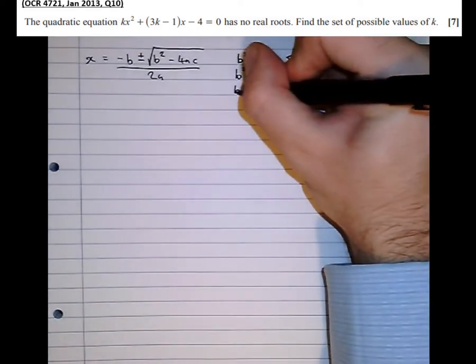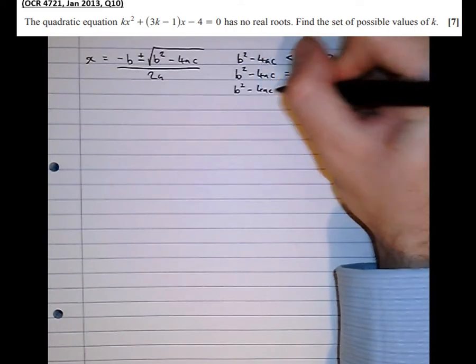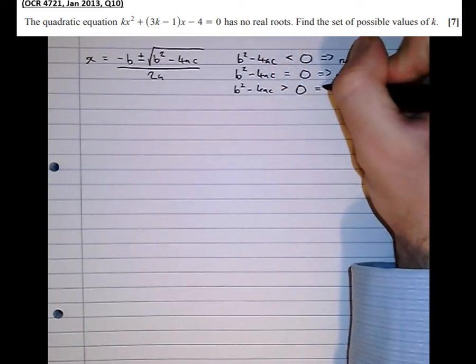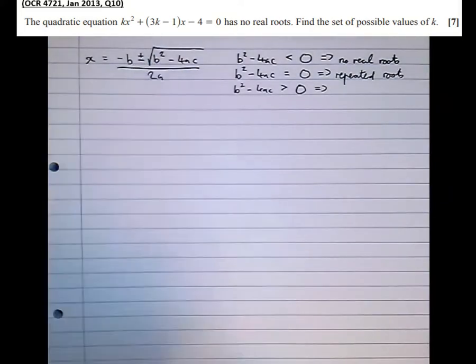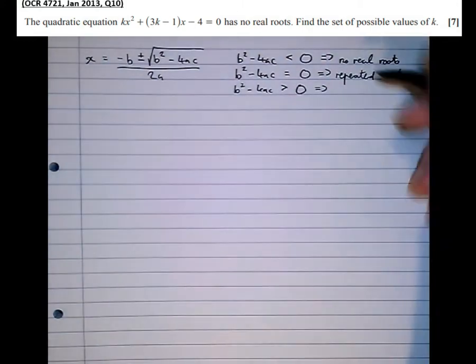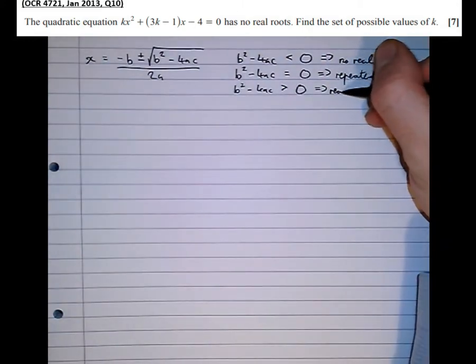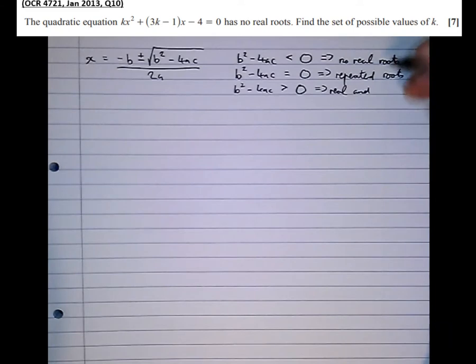And then b squared minus 4ac greater than zero. Well rooting a positive number gives us a positive number. So we're going to add a positive number and take a positive number away to give us two different roots. So real and distinct roots. Two different real roots.